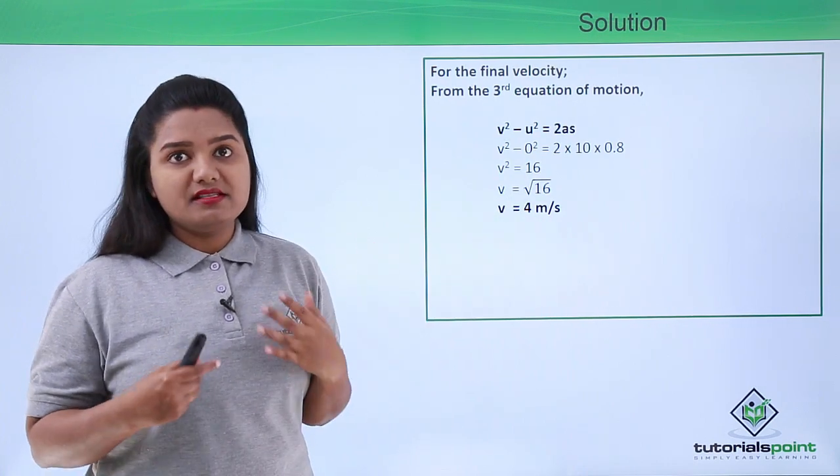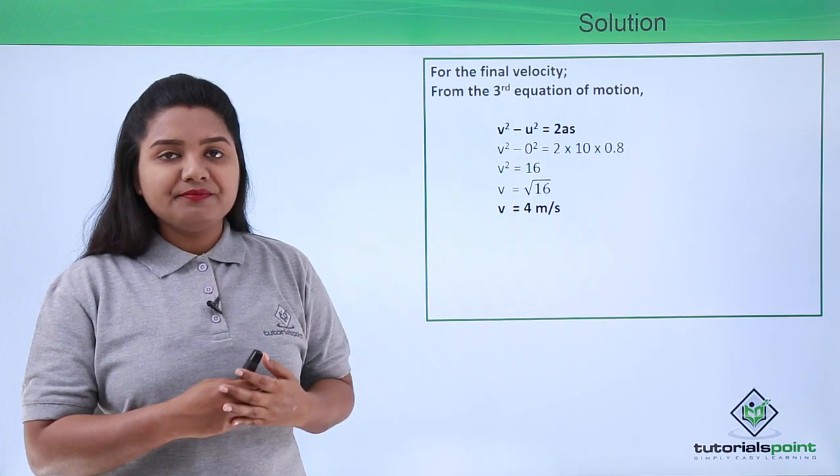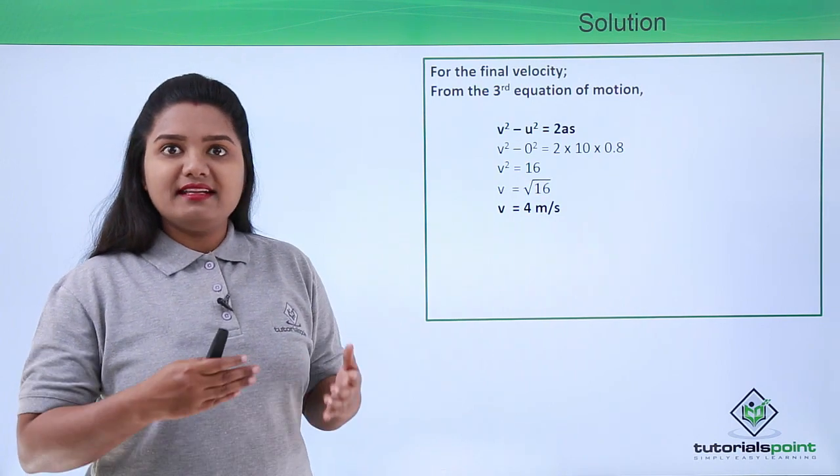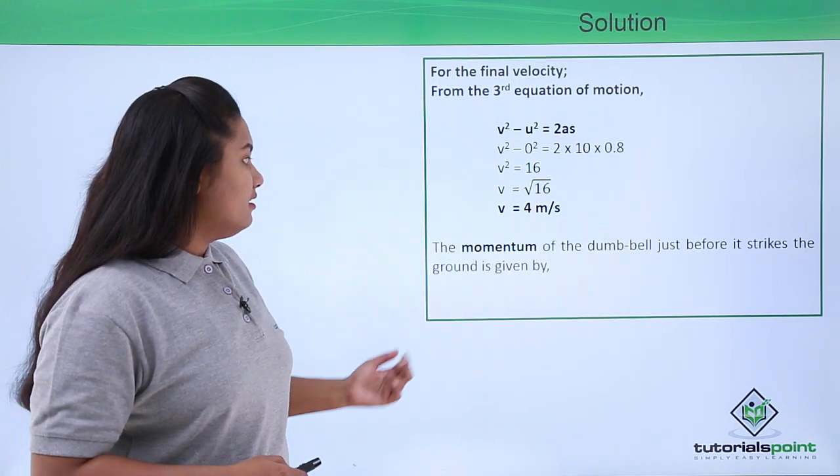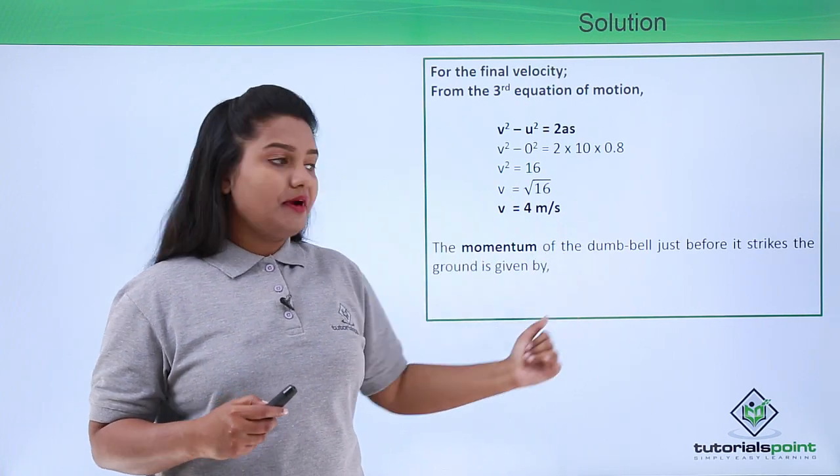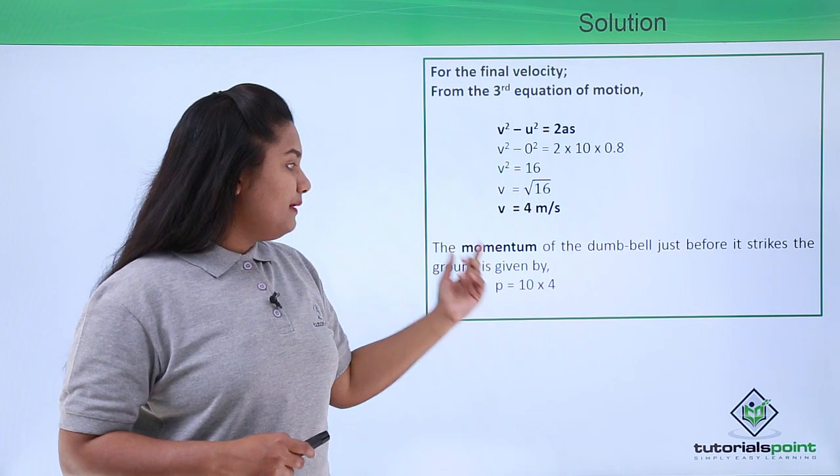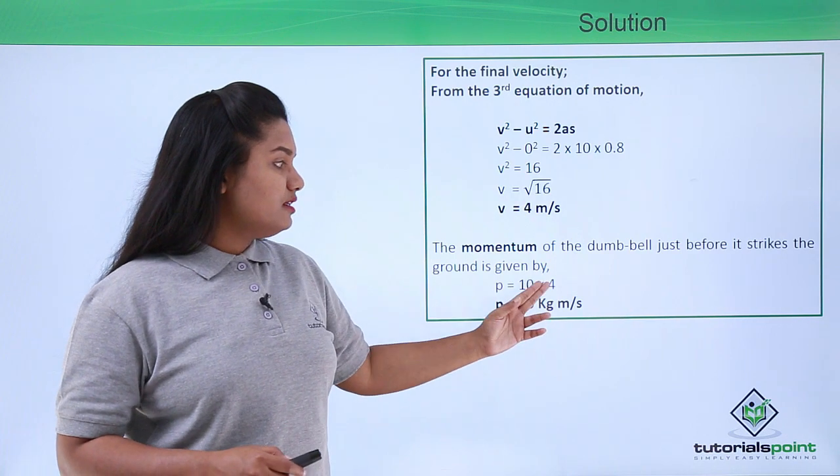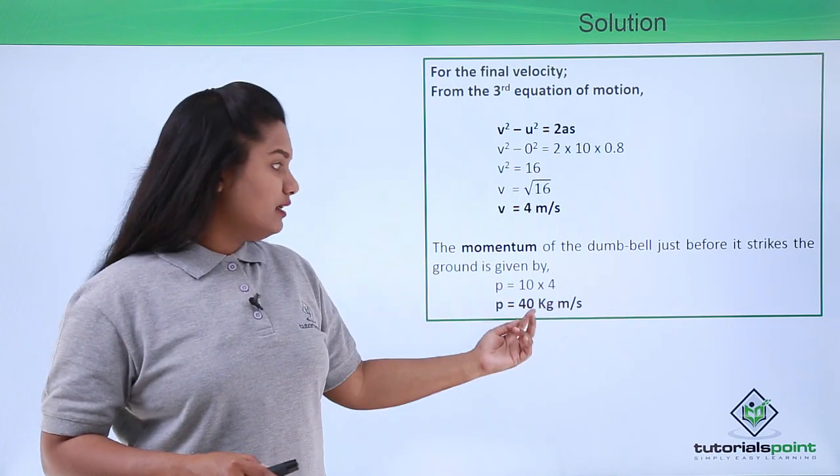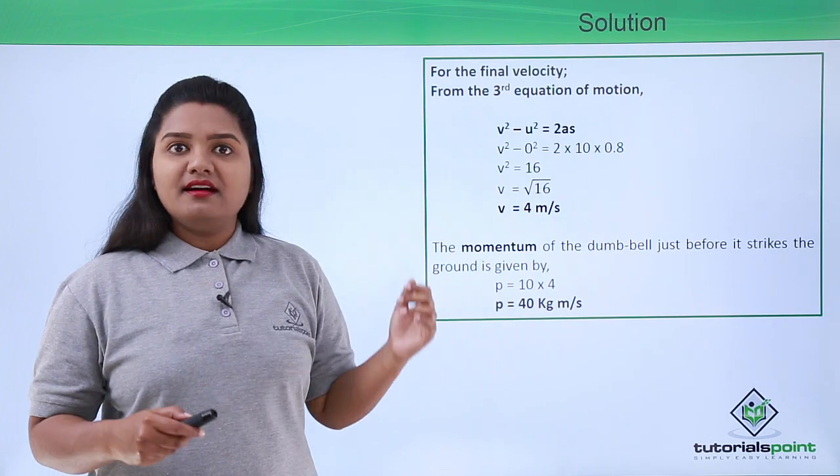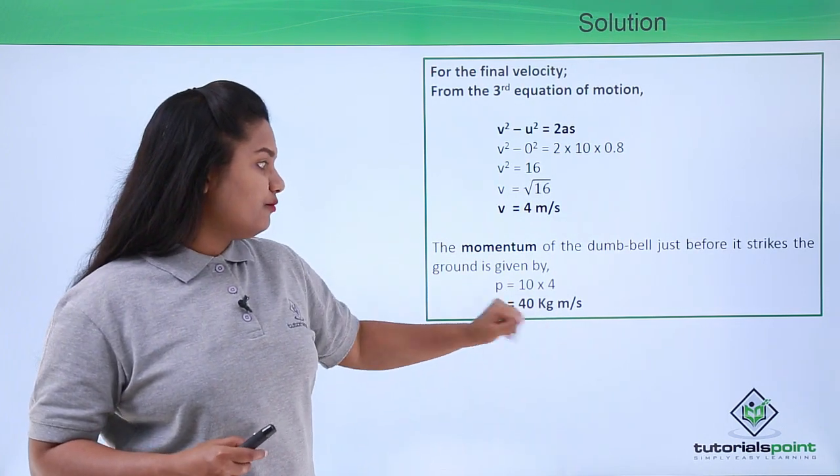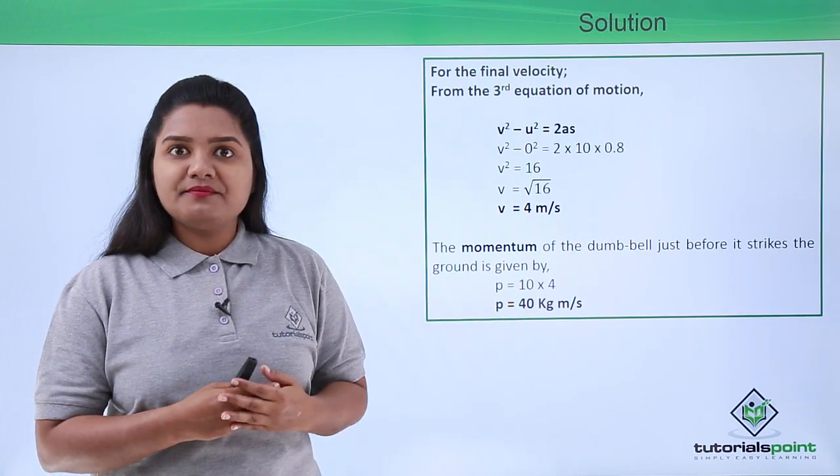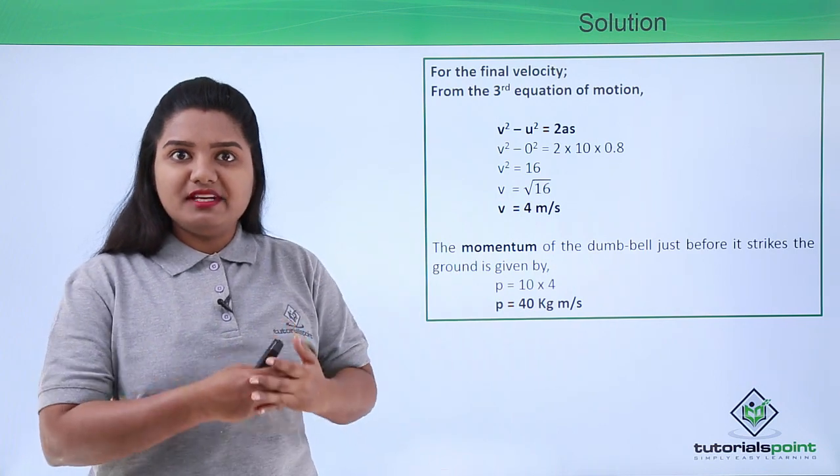We have the velocity value and the mass of the dumbbell, which is 10 kg. The momentum of the dumbbell just before it strikes the ground is given by p = mass × velocity, which is 10 × 4 = 40 kg·m/s. This kg·m/s is the SI unit of momentum. We should never forget to mention the unit of a physical quantity, because a physical quantity is meaningless without its unit.